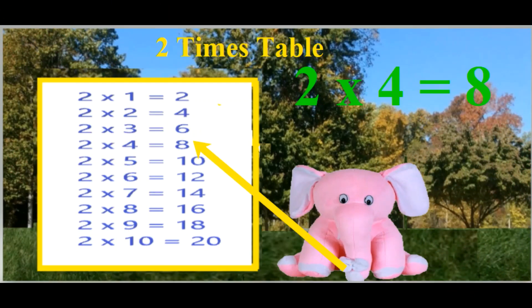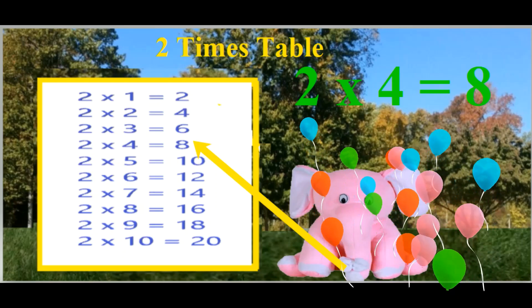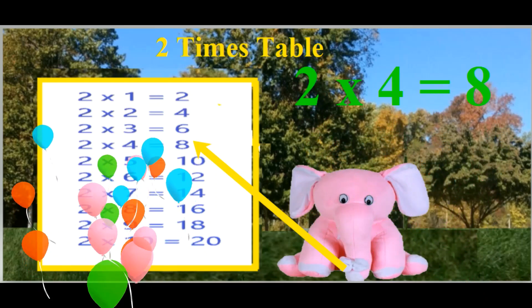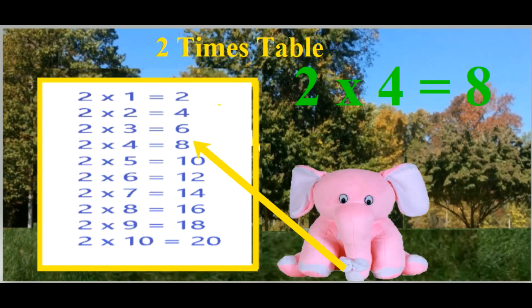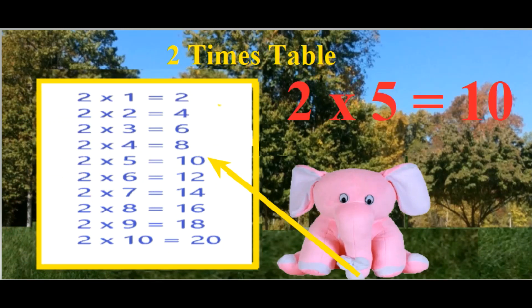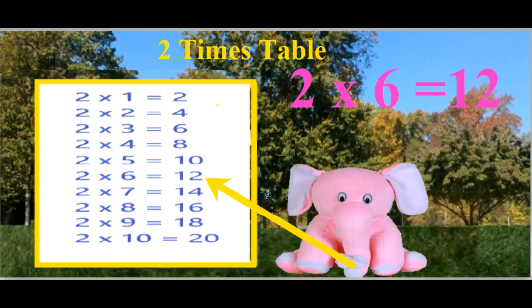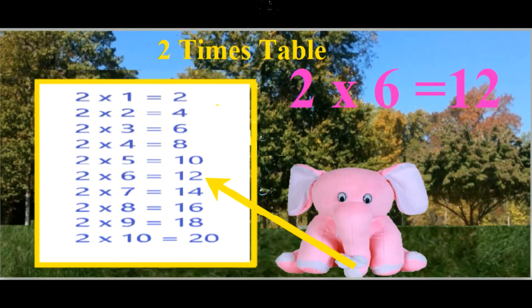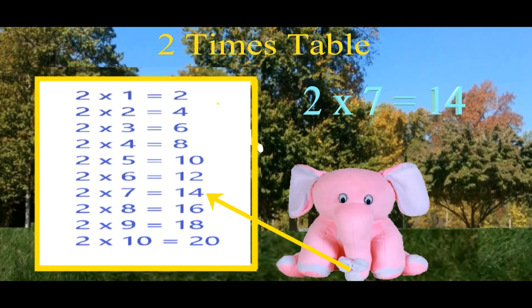2 4's are 8. 2 5's are 10. 2 6's are 12. 2 7's are 14.